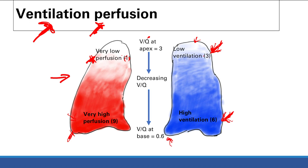At the bottom of the lung, the ratio changes. The VQ ratio is approximately 0.6, meaning there is more blood going to the bottom than there is air. Blood flows past alveoli but there isn't enough gas to oxygenate it, so some blood leaves poorly oxygenated. This ventilation-perfusion mismatch is an important concept that will be discussed further.